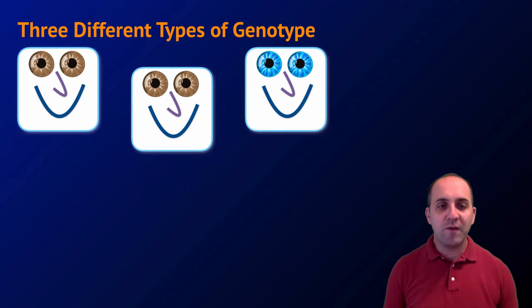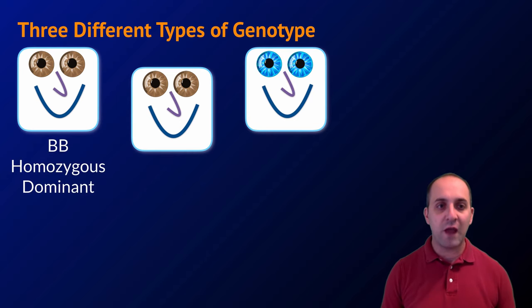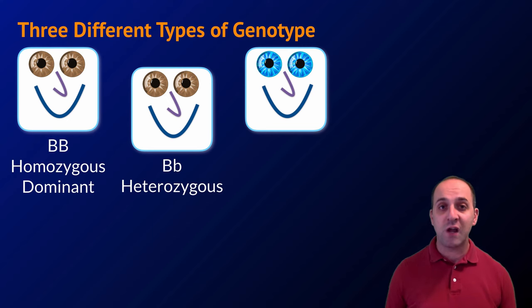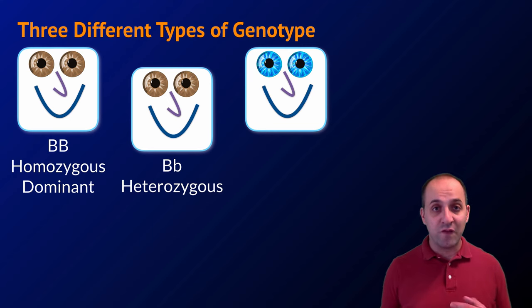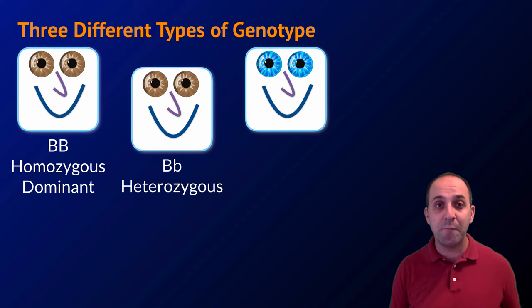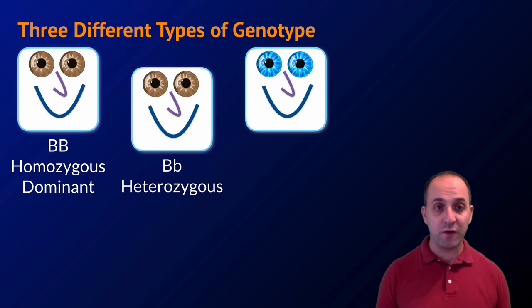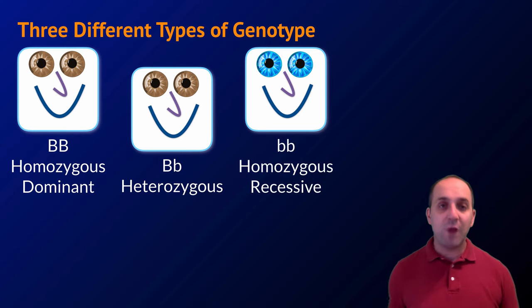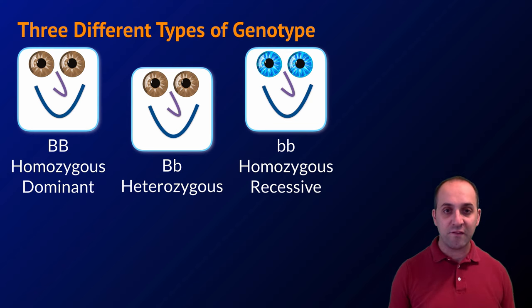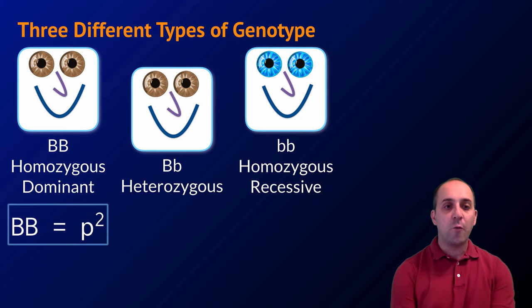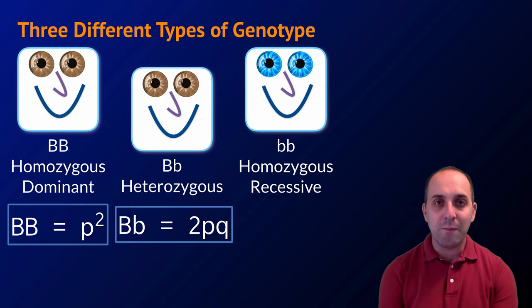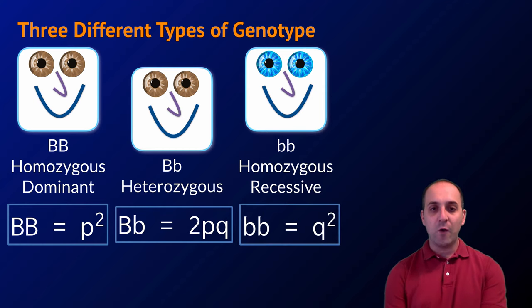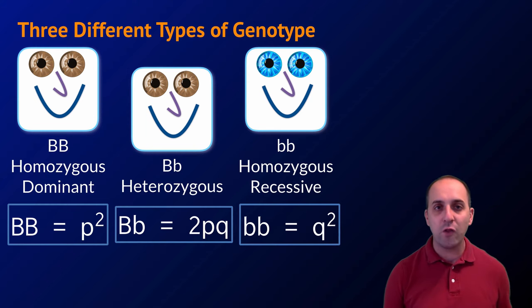For genotypes: big B big B gives brown eyes (homozygous dominant), big B little b gives brown eyes (heterozygous, since brown is dominant over blue), and little b little b is homozygous recessive giving blue eyes. In Hardy-Weinberg notation, big B big B equals p², big B little b equals 2pq, and little b little b equals q².